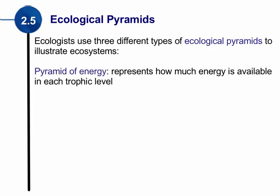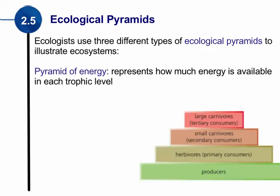The first one is what we call a pyramid of energy. A pyramid of energy represents how much energy is available at each trophic level. A pyramid of energy looks like a typical traditional pyramid — larger at the bottom, smaller at the top — very similar to our triangle for trophic levels. The bottom level is the producers, followed by herbivores, carnivores, etc., working our way up to the tertiary consumers at the top of the ecological pyramid.